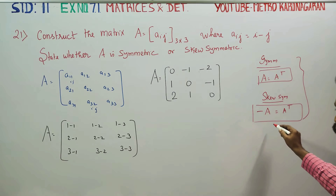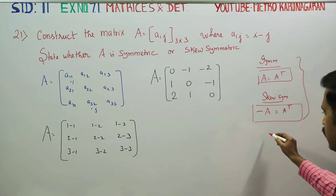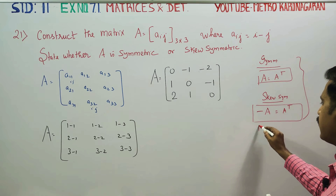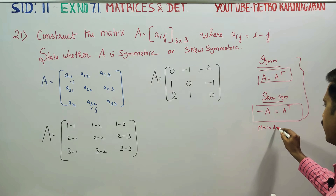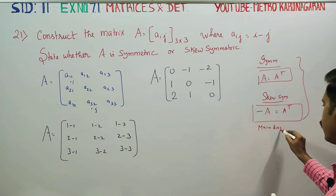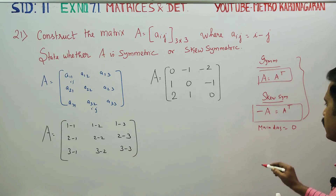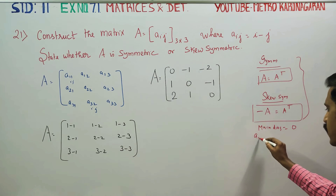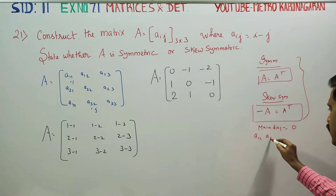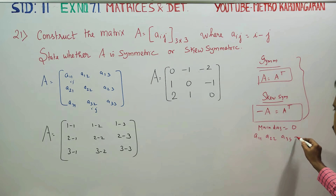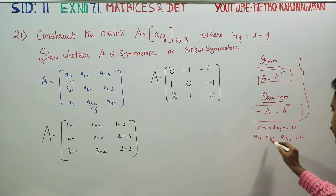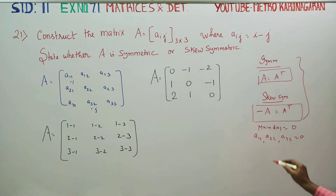There is an easy checking for skew symmetrical: the main diagonal elements — that is a11, a22, a33 — must all be 0.